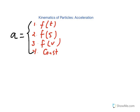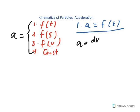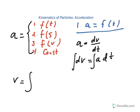Starting with the case where acceleration is a function of time — the acceleration of a particle could be changing as a function of time. Since acceleration is defined as the derivative of velocity, we can write dv equals a dt, then integrate both sides. Velocity would be the integral of a dt. Whenever you integrate, you need initial conditions to find the constant of integration.